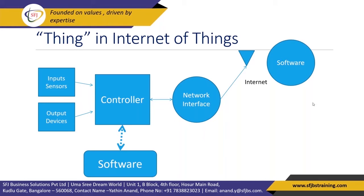What is the difference between IoT and AI? Basically there is no difference, but they can work together. You can analyze data on your mobile phone, and you can also send reverse commands which go from software to the network interface to the controller, allowing you to control your devices in IoT.